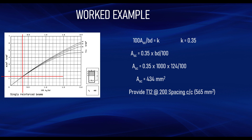We therefore provide T12 bars at 200 mm centres, which gives an area of 565 mm²/m — greater than the required 434 mm²/m. This is how you design a singly reinforced section using the design chart. You can design a beam the same way; the only difference is that B equals the actual width of the beam. For example, for a 230 × 450 mm beam, B = 230 mm and D = 450 mm. You compute M/bd², read it against fcu, obtain 100As/bd, and calculate the required area of reinforcement.